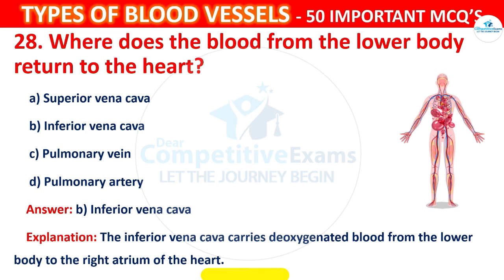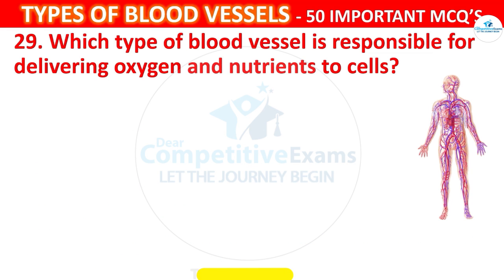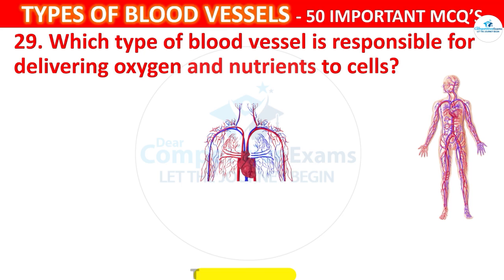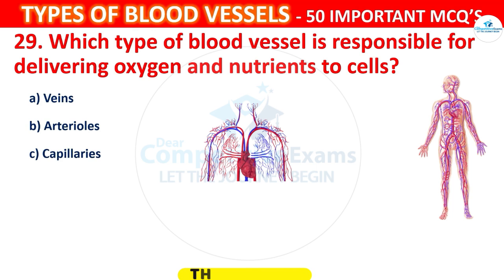Question number 29. Which type of blood vessel is responsible for delivering oxygen and nutrients to cells? Your options are: Veins, Arteries, Capillaries, or Arterioles.